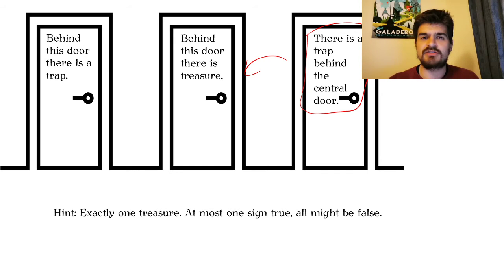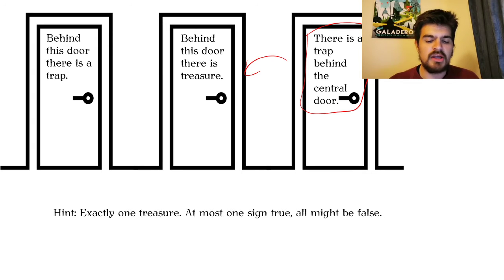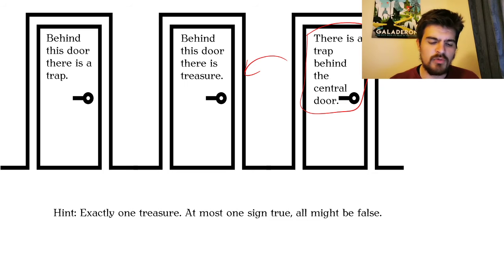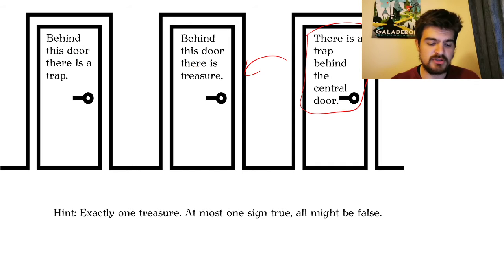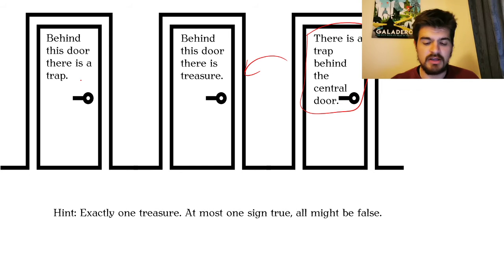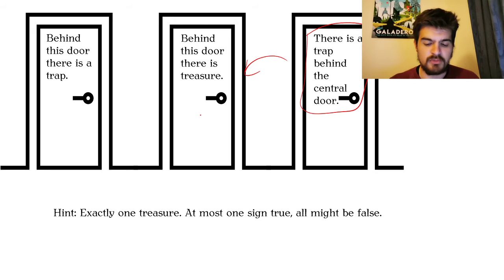The first one says behind this door there's a trap. Let's just move on to the second one. This one says behind this door there's treasure. We can see that both of those things can be false. It is possible that both are false, because for the first to be false it's just enough that there's a treasure behind this door, and for the second to be false, a trap must be here. They don't interfere with each other.